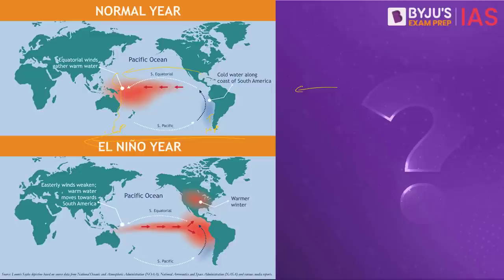But when there is El Niño, excessive warming takes place along the Peru coast. This makes that region relatively low pressure, and the Australian/Indian Ocean side becomes relatively high pressure. So the wind reverses, moving from west to east — from eastern Australia toward the Peru coast — taking away moisture from the Indian Ocean. As a result, the western side of South America gets a lot of rainfall, and India does not get enough rainfall during El Niño.